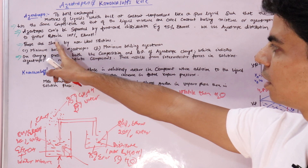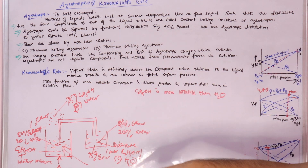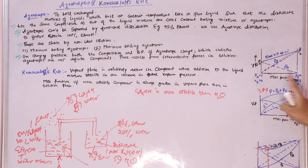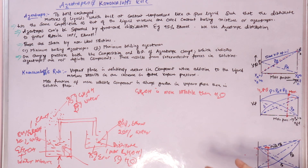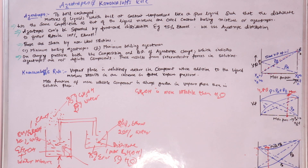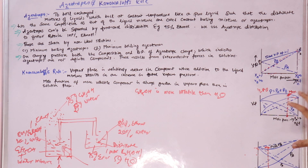Such azeotropes — where vapor pressure is higher than pure liquids and boiling point is lower — are known as minimum boiling azeotropes. At the composition where the vapor pressure is maximum, the boiling point is minimum. With this composition, the liquid mixture boils with a minimum boiling point temperature, and this is an example of a minimum boiling azeotrope.